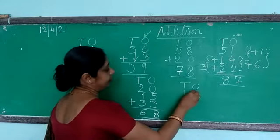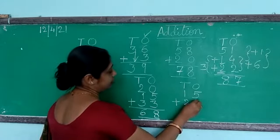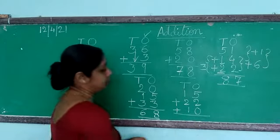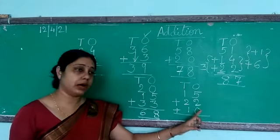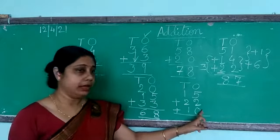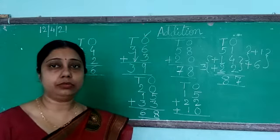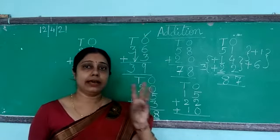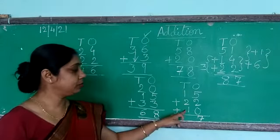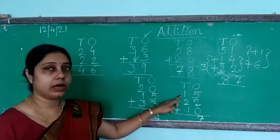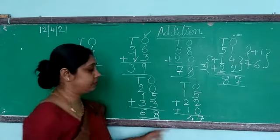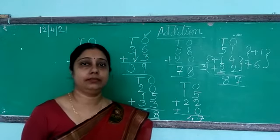Suppose 15 plus 22 plus 10. In the ones place: 2 plus 0 is 2, then 2 plus 5 — after 2 count 5 more: 3, 4, 5, 6, 7. So we write 7. In the tens place: 2 plus 1 is 3, then 3 plus 1 is 4. So we write 4. The answer is 47. I hope you have understood, children. Thank you.